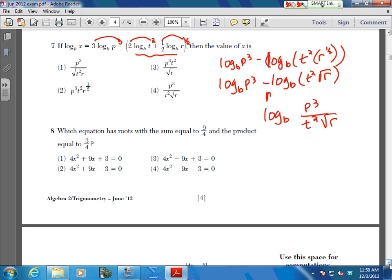And since they set this equal to log b of x, once you have your sides down to one term, one term, you can then cancel out the logs. You can only do that when it's one term, one term. So x is equal to what's left over here, which would then be your choice 4.